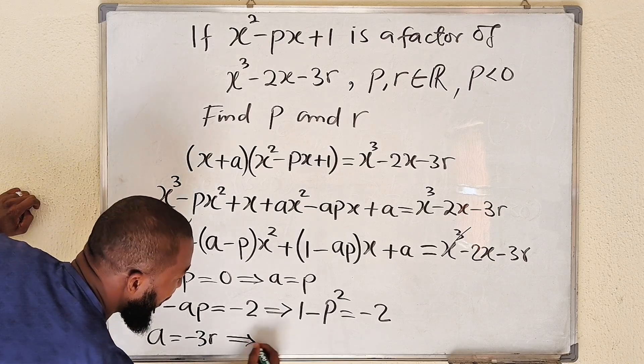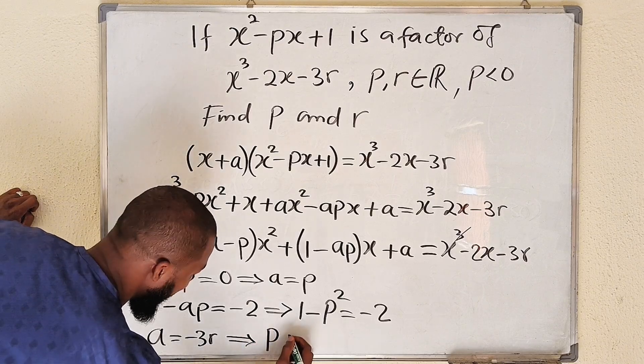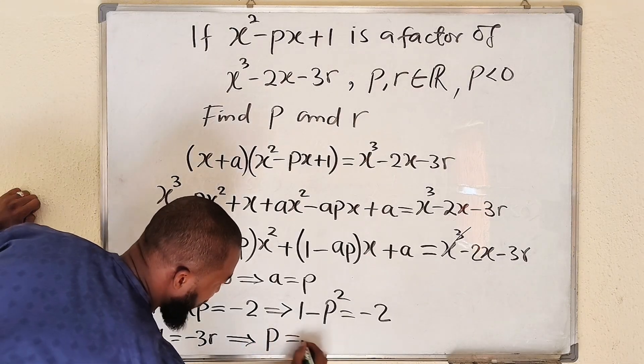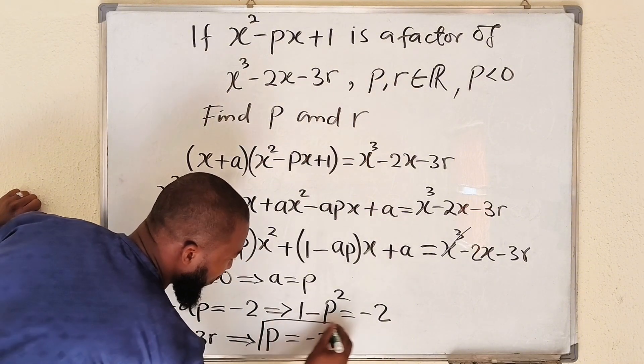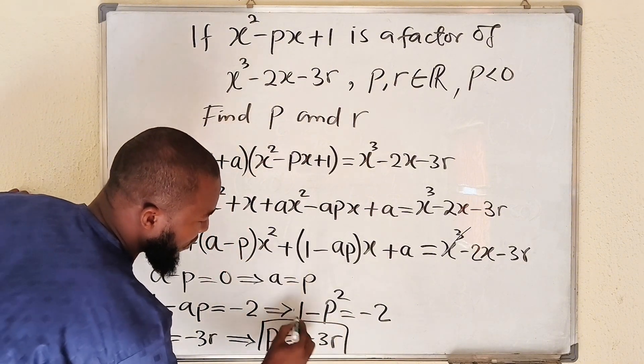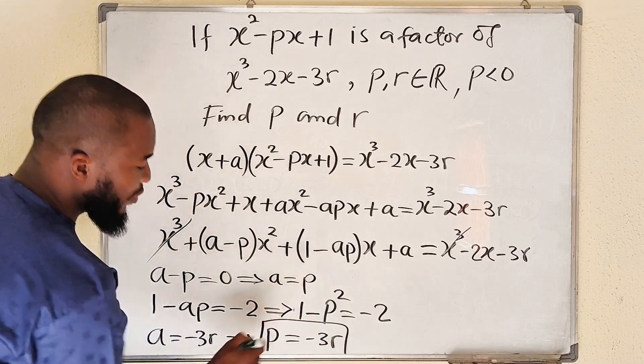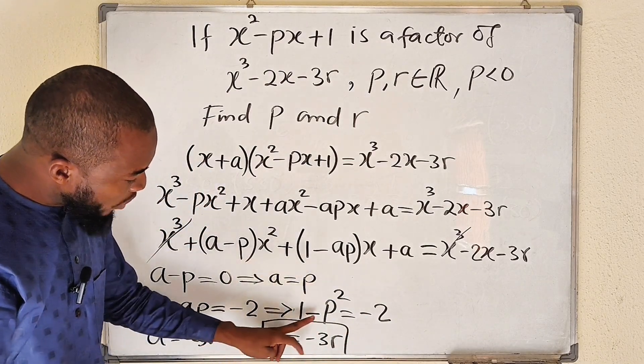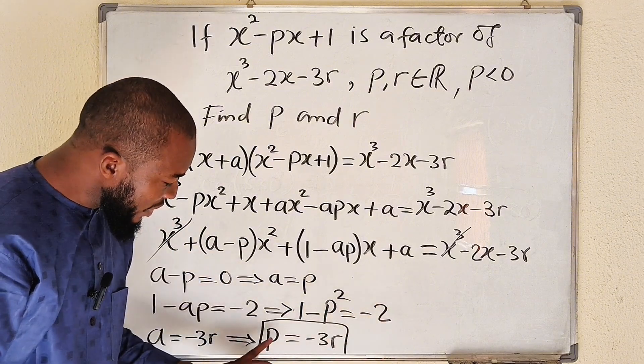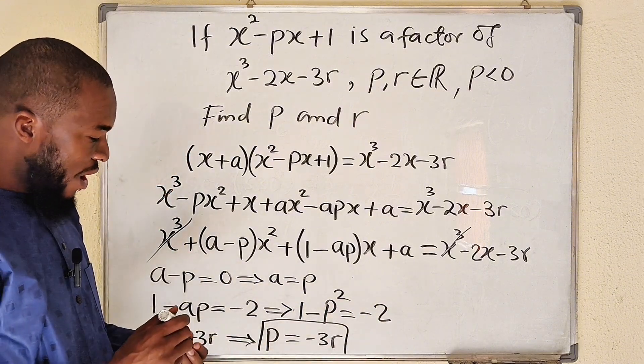That is exactly what we are looking for: p equal to negative 3r. So this is important. This is also important. This is important. So you can see the three important equations: a equal to p, 1 minus p squared equal to negative 2, and p equal to negative 3r.